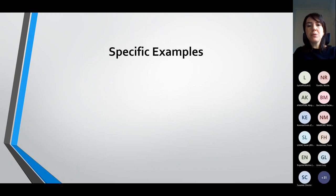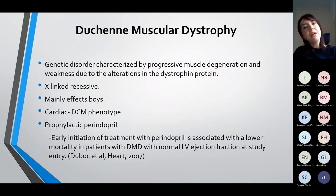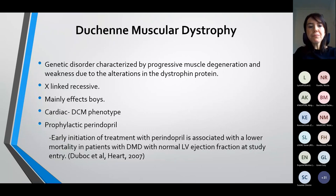Just a few specific examples of dilated cardiomyopathy in paediatric populations. The first is Duchenne's muscular dystrophy — a genetic disorder characterized by progressive muscular degeneration and weakness due to alterations in the dystrophin gene protein. This is X-linked recessive, so it mainly affects boys and presents very early. These boys tend to be picked up around the age of walking due to delayed motor milestones. The cardiac phenotype is that of dilated cardiomyopathy, and large studies have shown that early initiation of treatment with perindopril, an ACE inhibitor, is associated with lower cardiac mortality. The majority of our Duchenne's patients would be started on perindopril around age nine or ten in heart failure clinic.